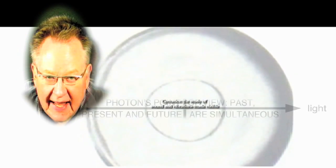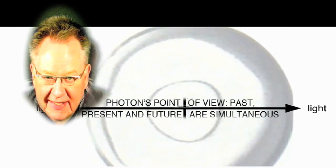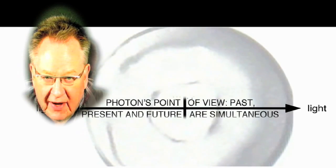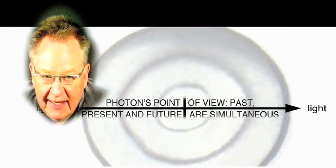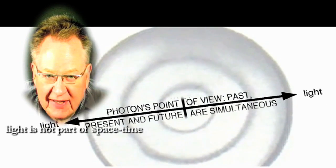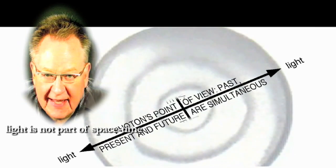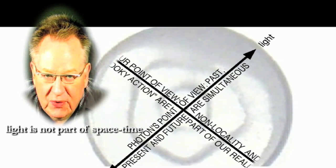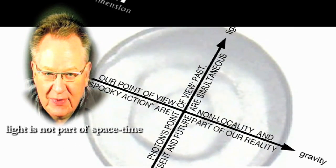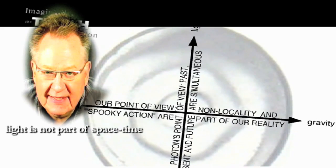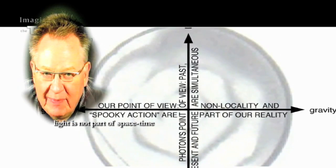Last time, in Light Has No Speed, we looked at a presentation made by physicist and author Peter Russell. In it, he showed how, from light's perspective, it's not part of our space-time. From light's point of view, there is no space, no time, no mass. Light does not exist within the world of space-time and matter.